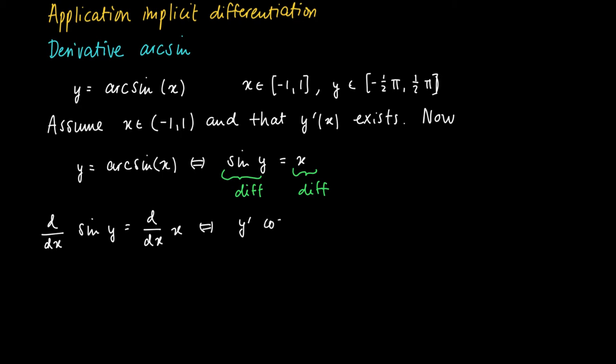If we apply the chain rule on the left-hand side, we get y' times the cosine of y, and on the right-hand side, we get just 1, so that y' equals 1 over the cosine of y.